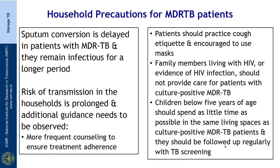There are special household precautions for MDR TB patients because sputum conversion is delayed and they remain infectious for a longer period. Risk of transmission in households is prolonged and additional guidance needs to be observed. More frequent counselling to ensure treatment adherence is critical, as treatment duration is 24 months. Patients should practice cough etiquette and are encouraged to use masks. Family members living with HIV should not provide care for patients with culture-positive MDR TB. Children below 5 years of age should spend as little time as possible in the same living spaces as culture-positive MDR TB patients and should be followed up regularly with TB screening.